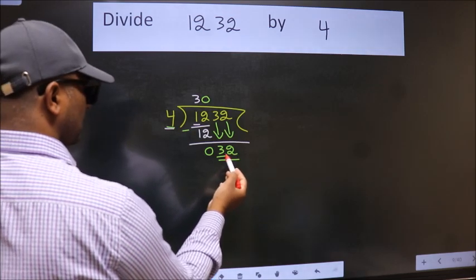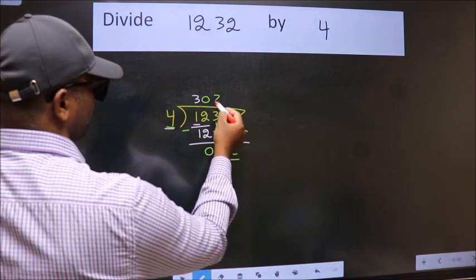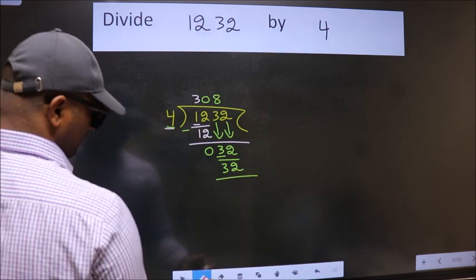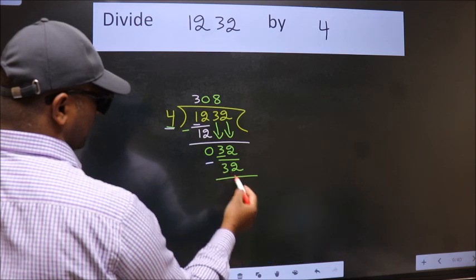When do we get 32? In the 4 table, 4 times 8 is 32. Now we subtract. We get 0.